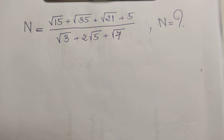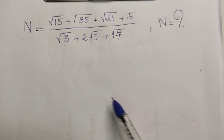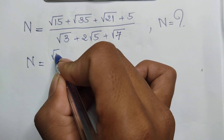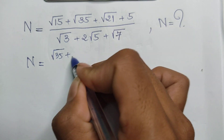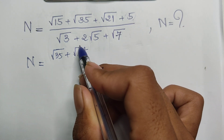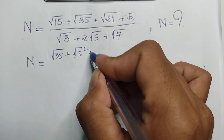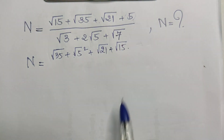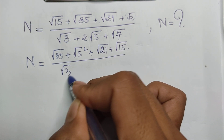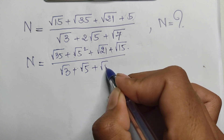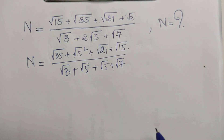Okay, let's go to the solution. Look at my trick — it's a nice trick to simplify this equation. Now, for the expression n, I can rewrite the numerator: I write √35 and then √5 squared (which simplifies to 5), plus √21, plus √15. For the denominator, I write √3 plus √5 plus √5 plus √7.